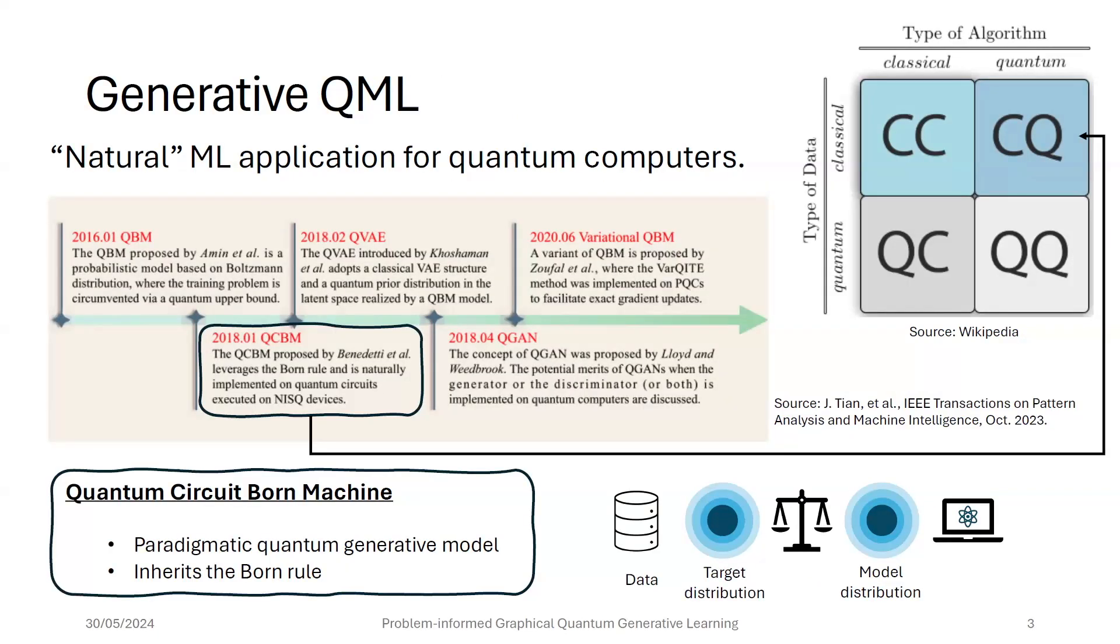Now, since quantum systems are generally or inherently probabilistic, it seems like a natural machine learning application of quantum computers to do generative learning with them. And we want to use those qubits together with the parametric quantum circuit to learn a probability distribution over binary random variables. These are paradigmatic quantum generative models that naturally inherit the Born rule so that we can use them to generate these discrete distributions. And this is, of course, quantum machine learning with classical data.